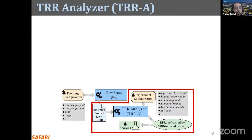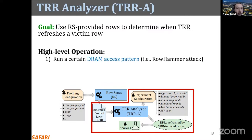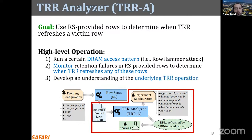Now let's look at the second part: TRR analyzer. The goal of TRR analyzer is to use the row scout provided rows to determine victim rows. At a high level, TRR analyzer runs a certain DRAM access pattern, monitors retention failures in the row scout provided rows to determine when TRR refreshes any of them, and based on when and which rows are refreshed by TRR, the user develops an understanding of the underlying TRR operation.